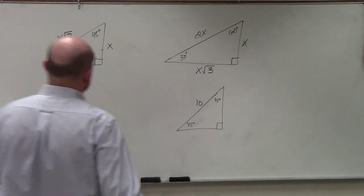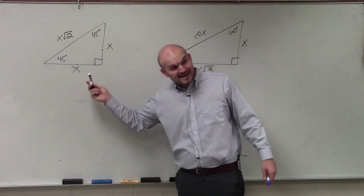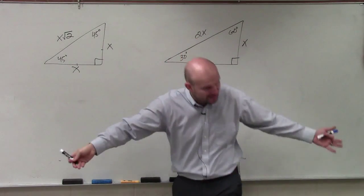So in this example, ladies and gentlemen, if you guys remember, what we were talking about is if you go from the side length to the hypotenuse, you multiply by the square root of 2, correct?